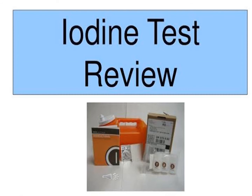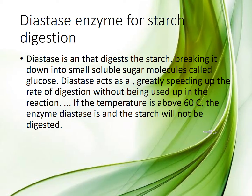Starch is a storage sugar in plants and it is a polysaccharide. We use the diastase enzyme to digest it. Diastase enzyme is used for starch digestion — it digests the starch, breaking it down into small soluble sugar molecules called glucose. So starch is converted into glucose by using diastase. Diastase increases the rate of digestion without being used up in the reaction.